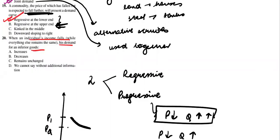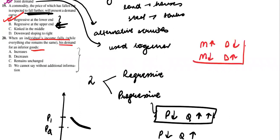Question 20: when an individual's income falls, his demand for inferior goods increases. Inferior goods have an opposite relationship with income — when income increases, demand decreases; when income decreases, demand increases. Because income is decreasing, the consumer shifts towards inferior commodities and cannot afford normal goods. So the demand for inferior goods increases. The answer is A.